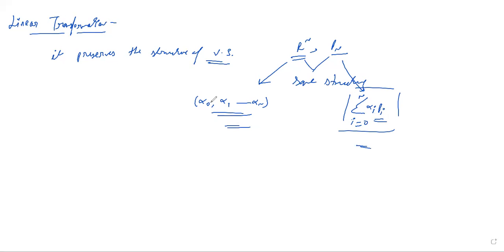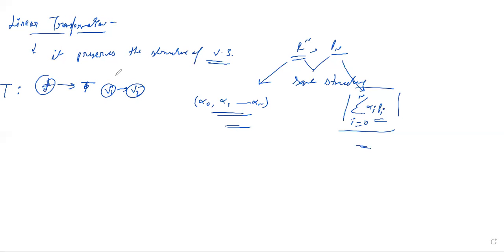That's why we say that linear transformation is basically a function which transforms one vector space to another. In linear transformation, it preserves the structure of the vector space — without changing the structure, we are transforming one vector space to another.